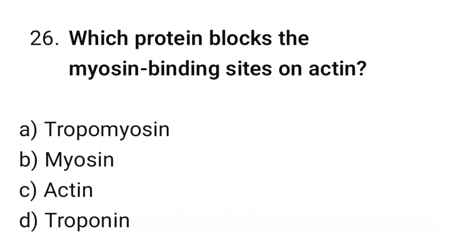Question number 26: Which protein blocks the myosin binding sites on actin? The correct option is A. Tropomyosin.